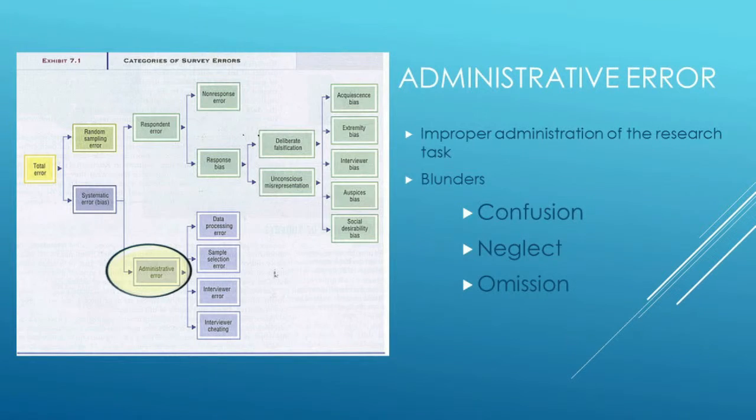So those are the major problems that respondents run into, and we should guard against them. As an interviewer, we should be aware of those potential problems. The other set of problems we often run into are administrative error problems — problems resulting from the administration of the survey and who's administering it. Administrative error could be categorized as confusion, neglect, or omission. Those could be the key things that influence administrative error.